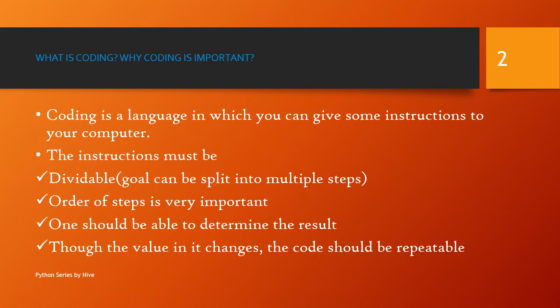There are four important steps or properties that instructions must have. First, they must be dividable — the entire goal has to be split up into multiple steps because we have to execute it step by step. We cannot just start writing everything and immediately get the output, because we have to debug and check every single aspect.